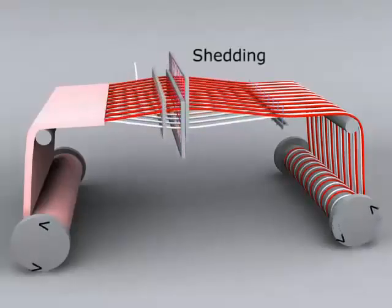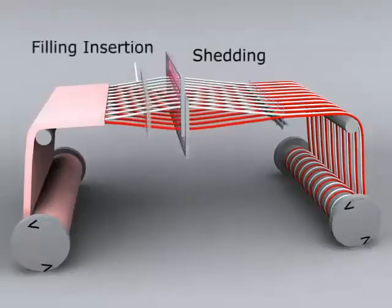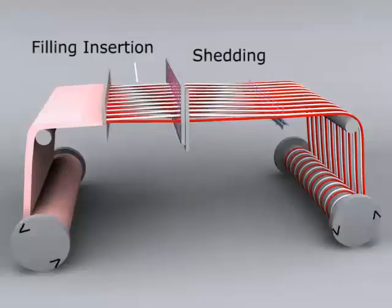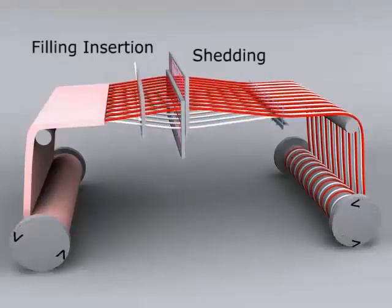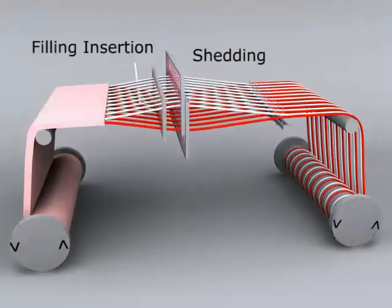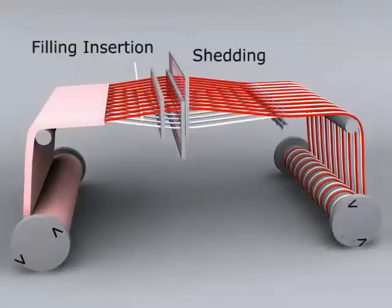The second motion needed is filling insertion. Through the open shed of warp yarns, the filling yarn is inserted so that it interlaces with the warp yarns to produce a particular weave design.